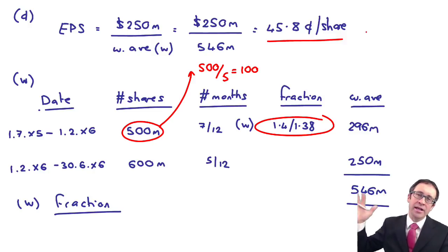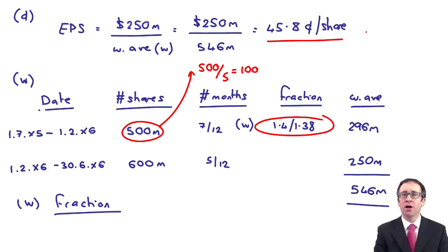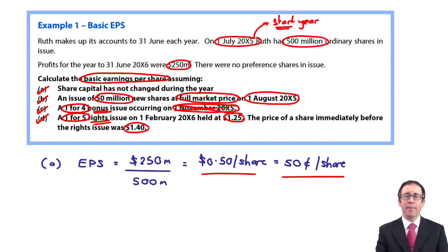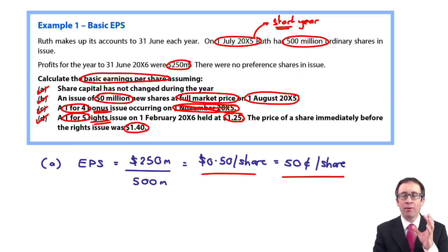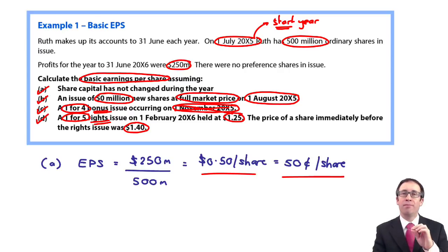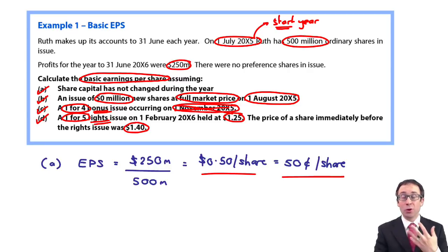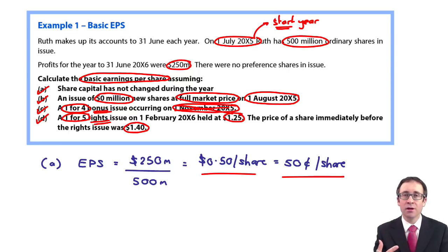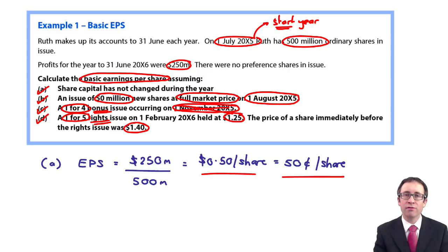That is really challenging — really, really difficult. What I think you need to do is work the question again. Make sure you're happy with it. Parts B and C you'll be fine with; Part D is the challenge. I'd recommend working Part D again, then practising examples in the study text of your chosen tuition provider. Once you're happy with basic EPS, come back to the videos and we can start thinking about diluted EPS. I'll see you a little bit later once you've done a little bit of work yourself. Enjoy.